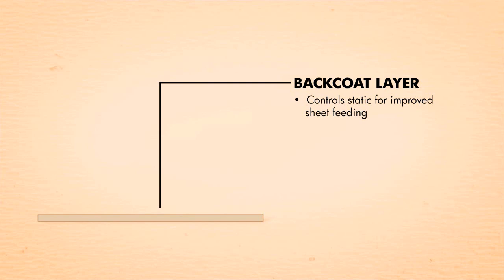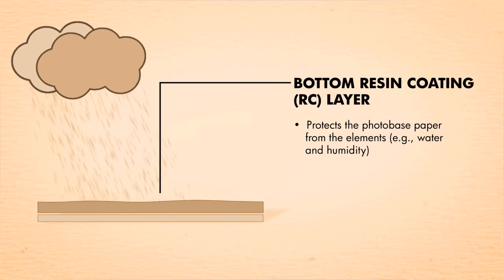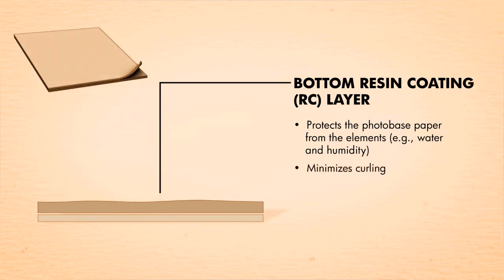inkjet photo paper starts with the back coat layer. Next comes a resin coating that protects the paper from the elements, like water and humidity, and helps prevent the paper from curling.